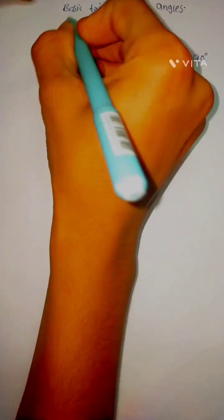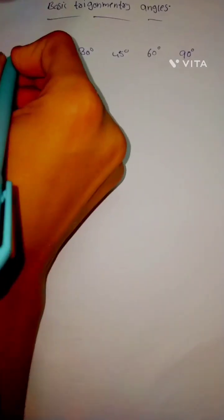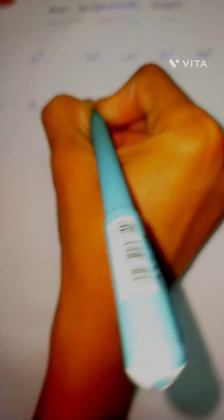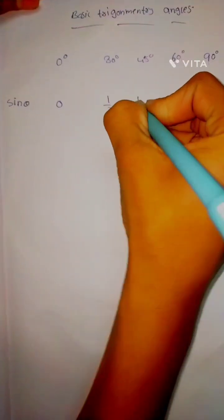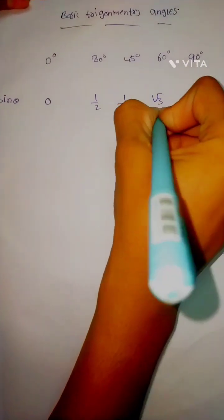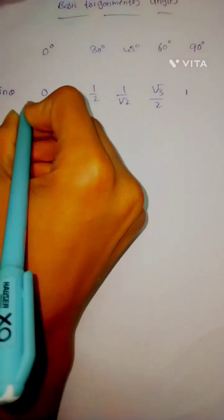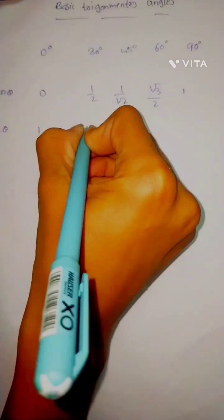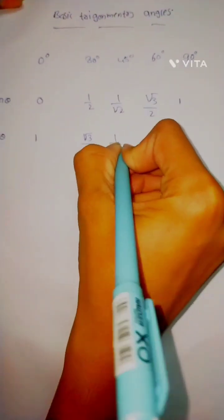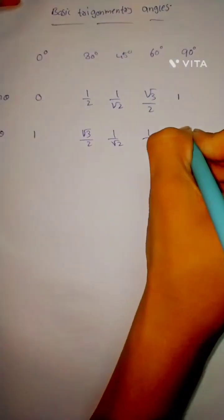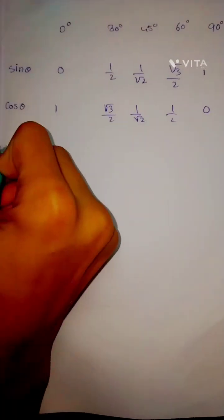There are 6 basic trigonometry ratio angles. Sin theta: 0, 1/2, 1/√2, √3/2, 1. Cos theta: 1, √3/2, 1/√2, 1/2, 0.